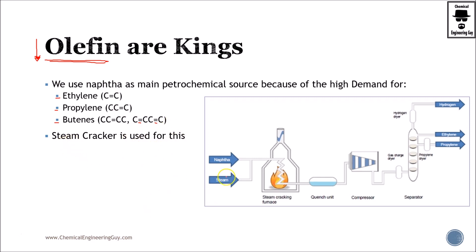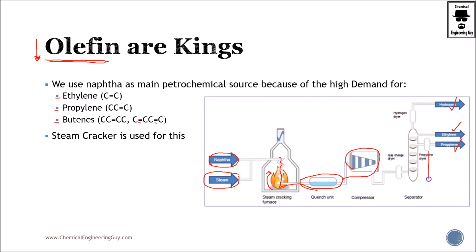I just want to give you a broad overview. We are going to be using naphtha and steam, mixing them together, and then cracking them via high temperatures. What happens here is that we quench and compress the output, and you will see there will be plenty of hydrogen, ethylene, and propylene, as well as C4+ material.